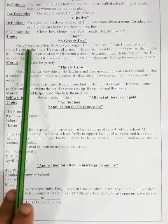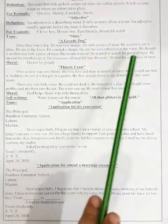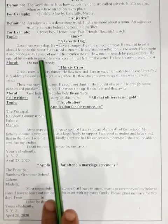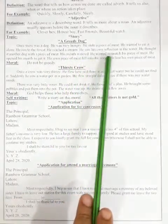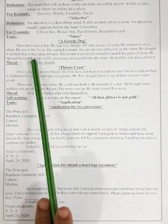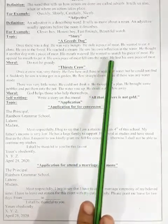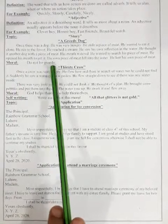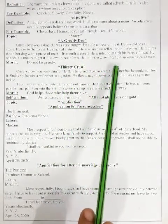Greedy Dog: Once there was a dog. He was very hungry. He stole a piece of meat. He wanted to eat it alone. He ran to the forest. He reached a stream. He saw his own reflection in the water. He thought another dog with a piece of meat — his mouth watered. He wanted to snatch that piece of meat.